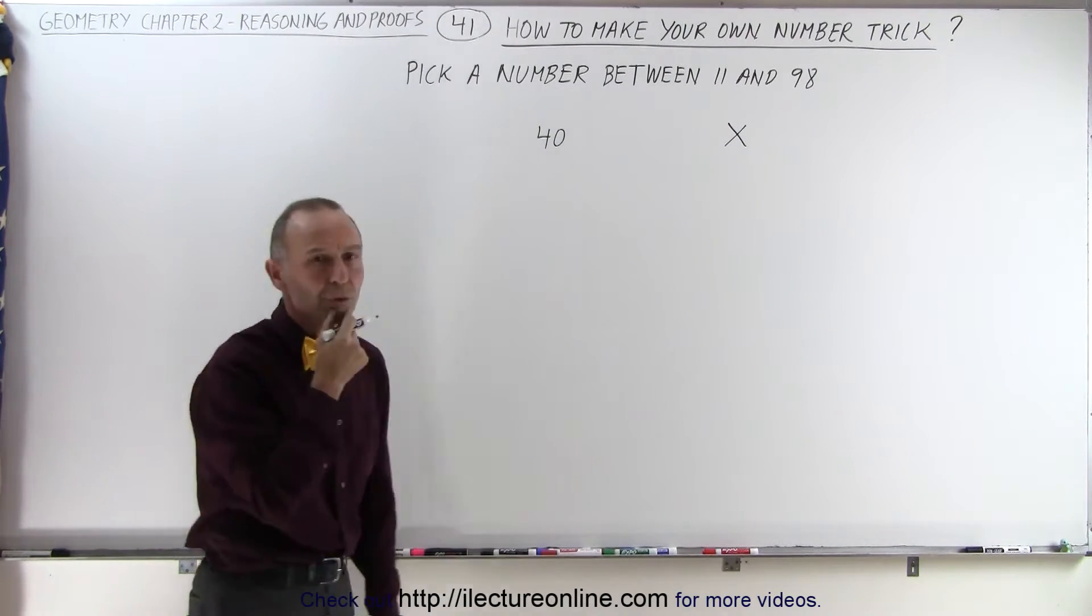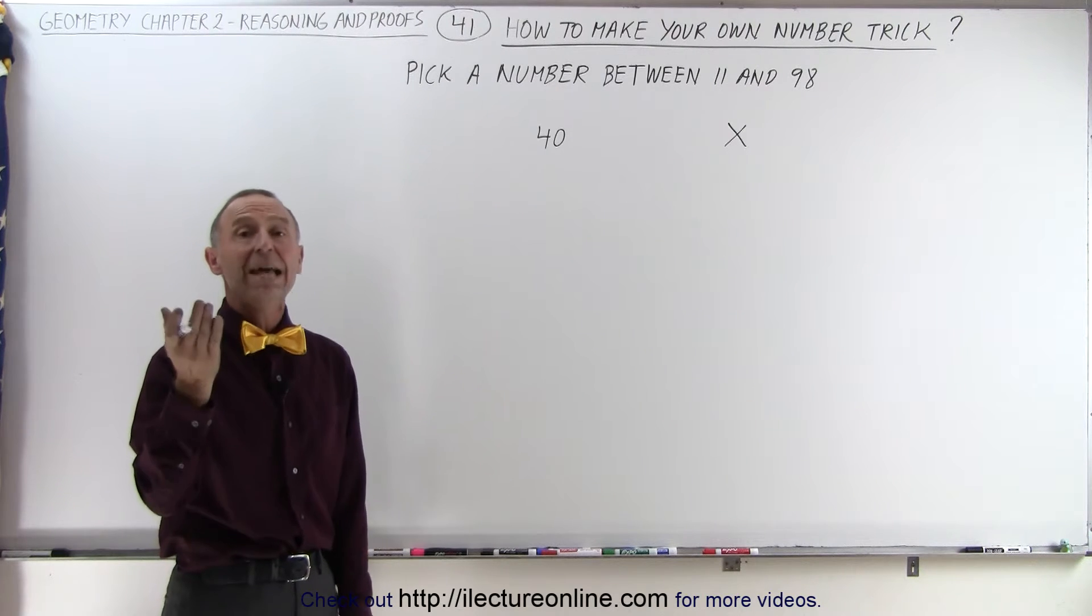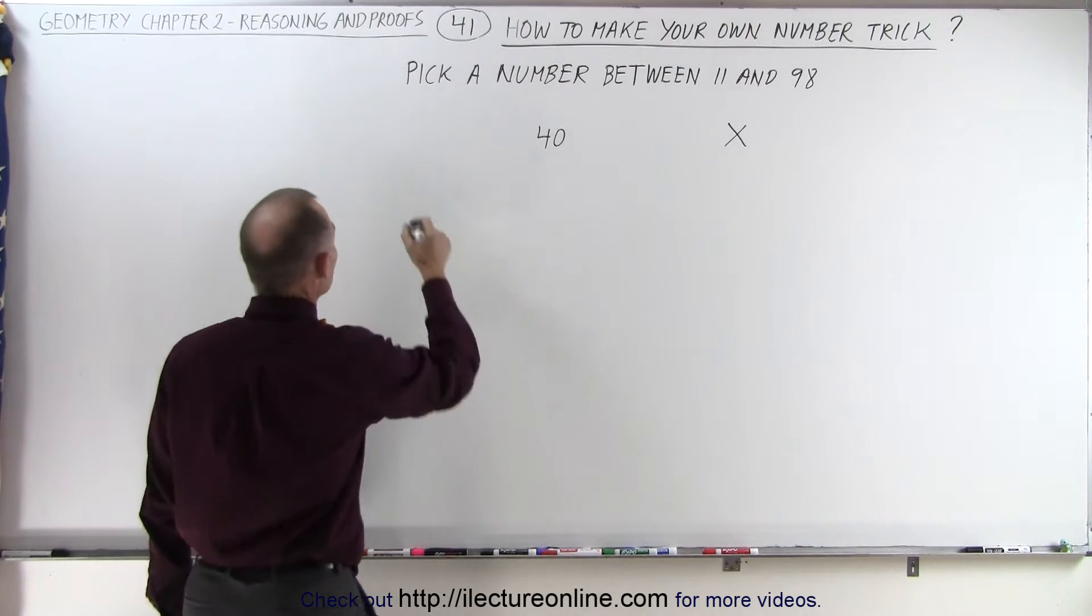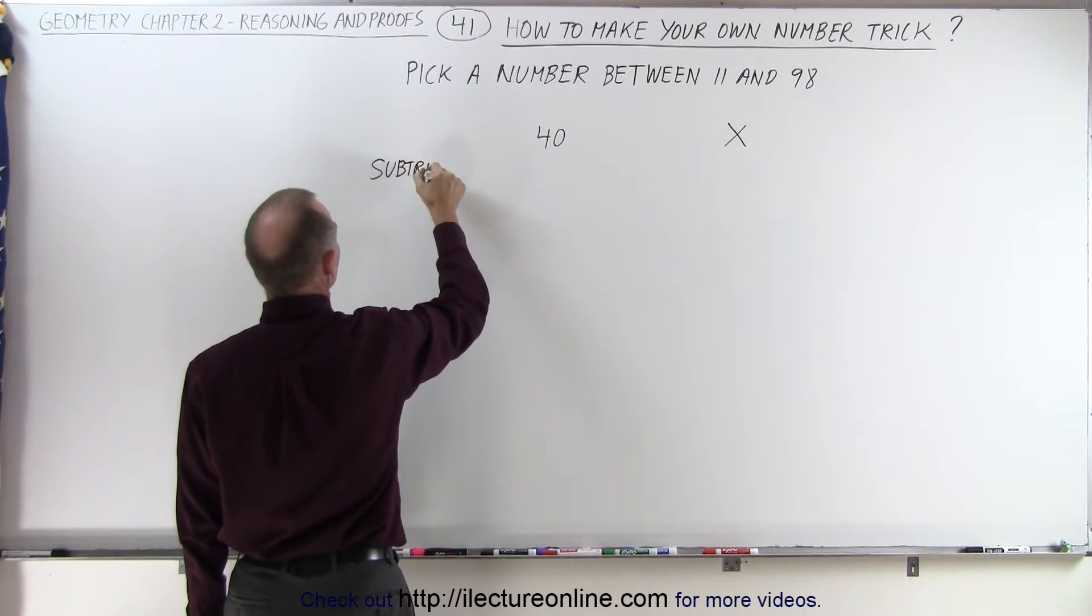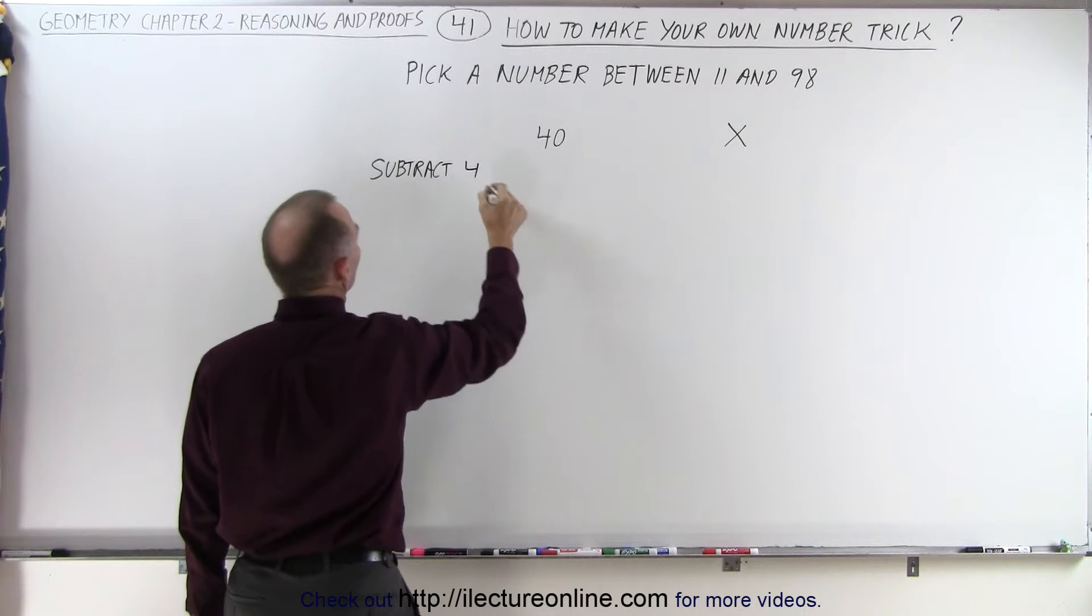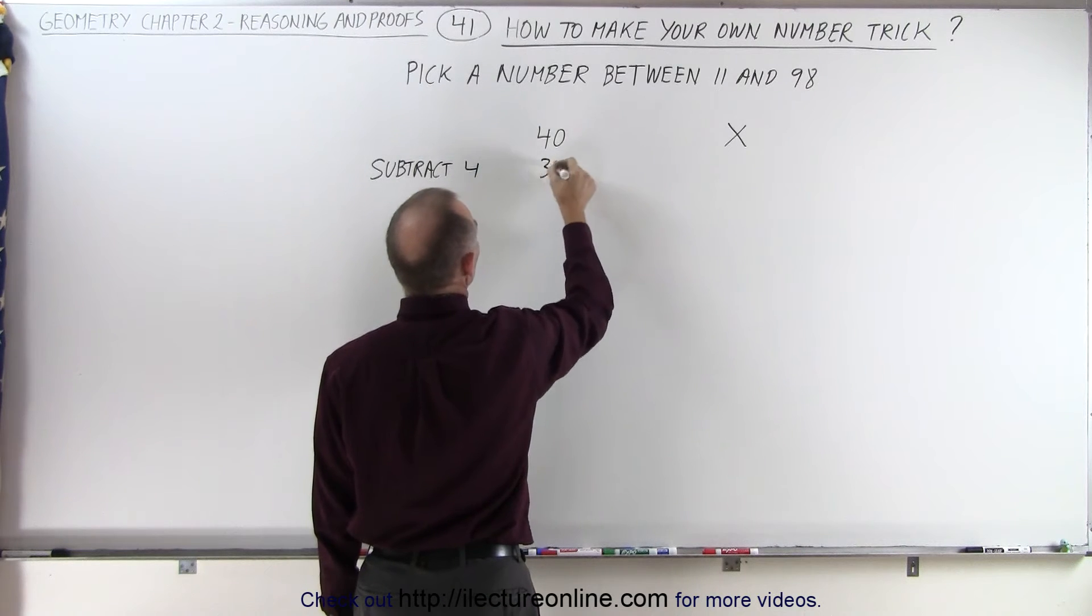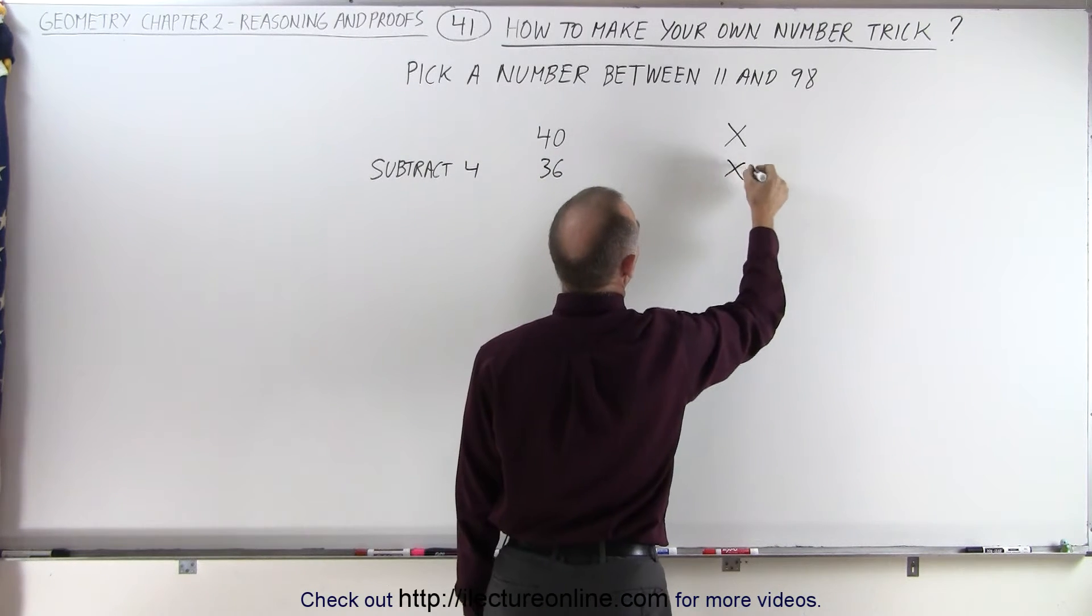So now what we're going to do is let's say subtract 4. So 40 minus 4 gives us 36, that would be x minus 4.